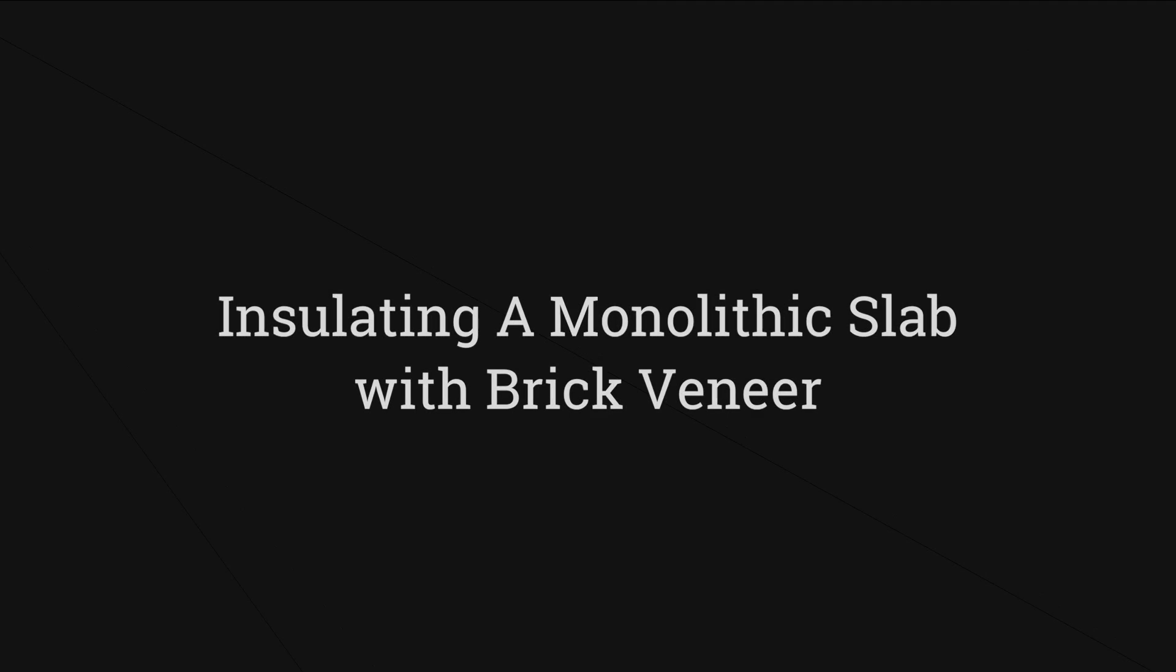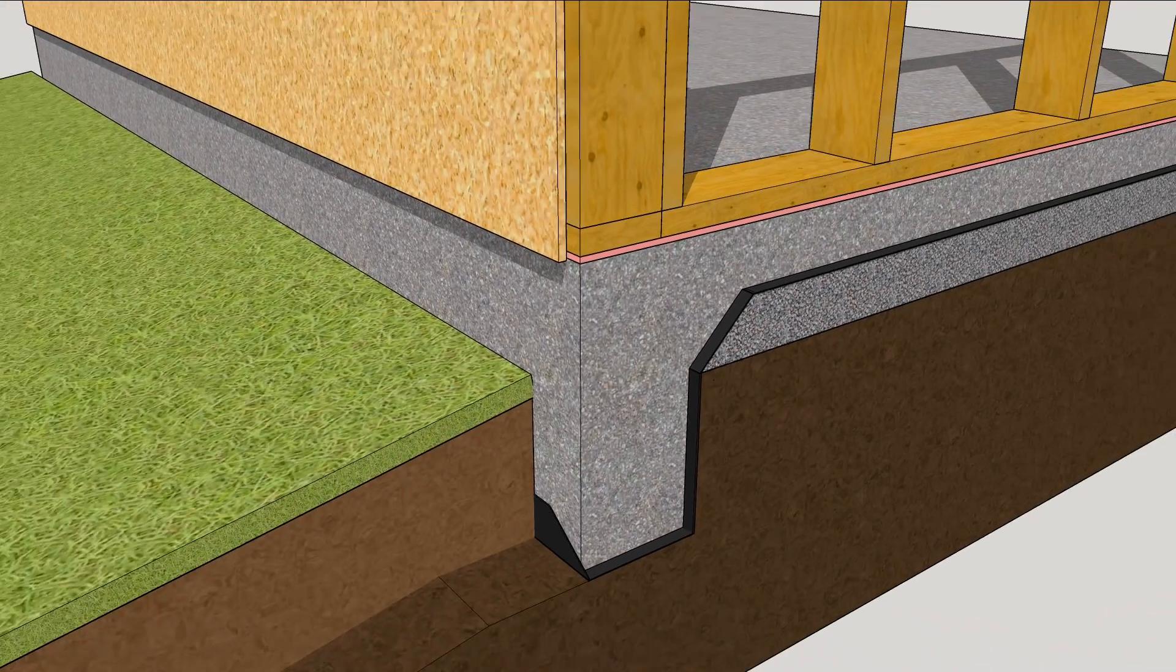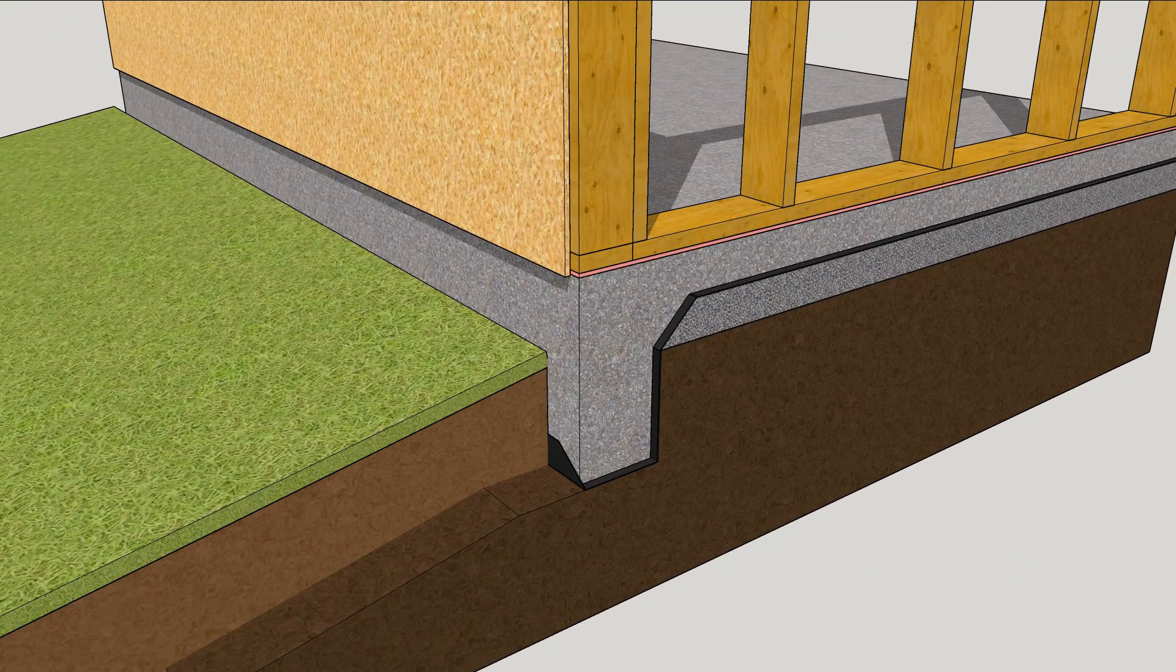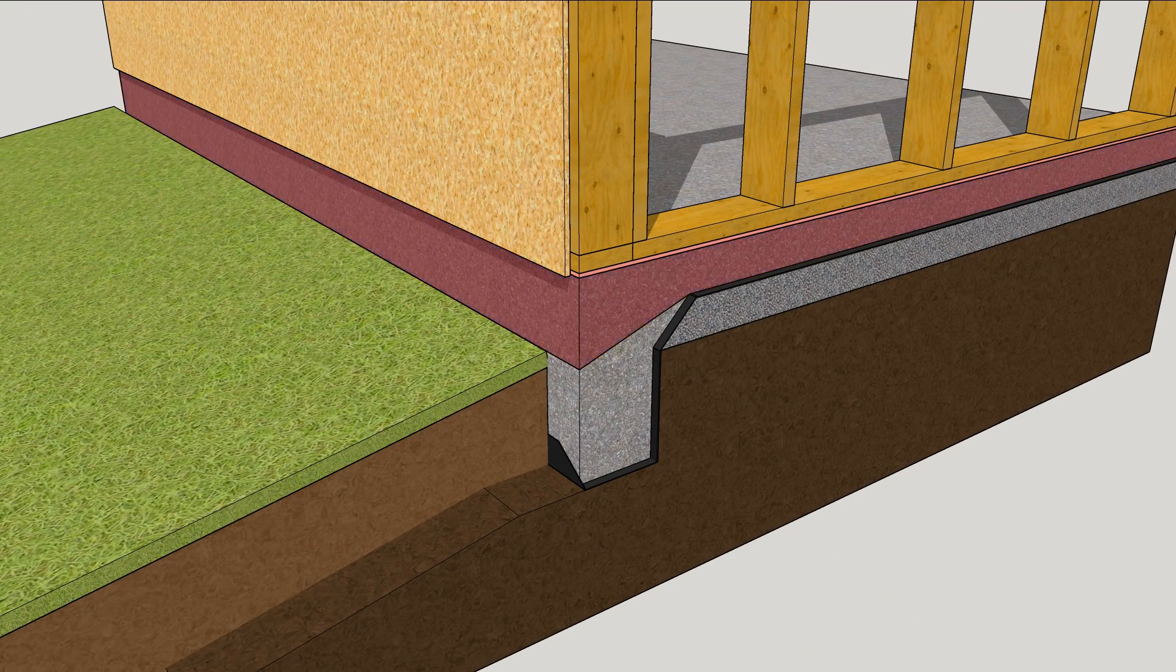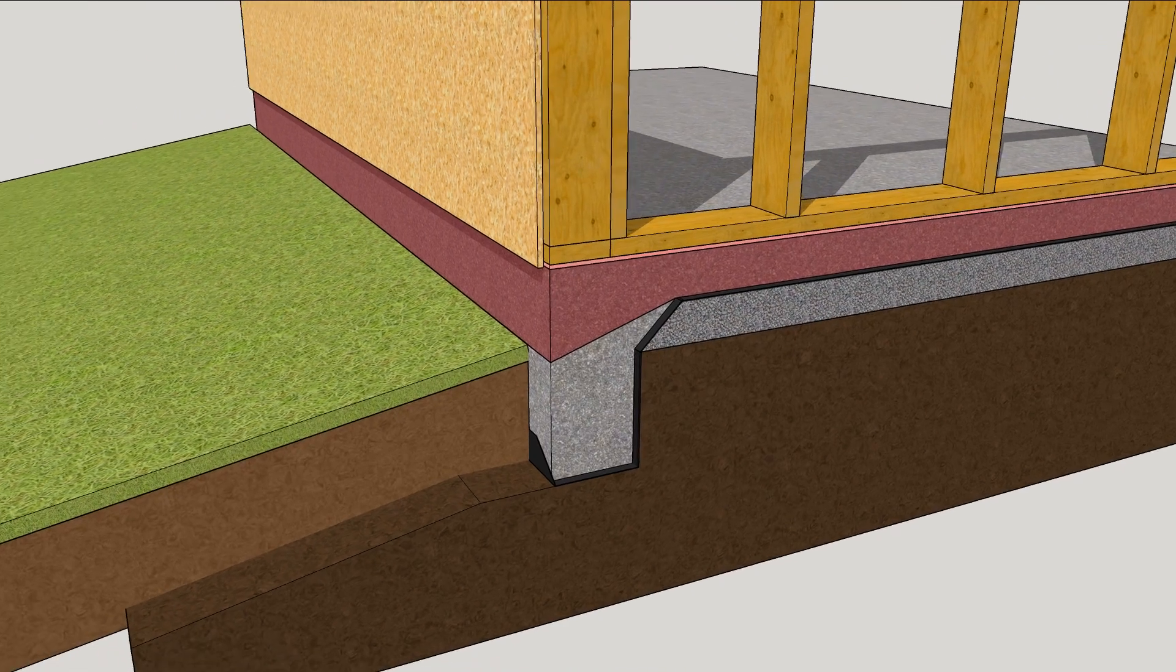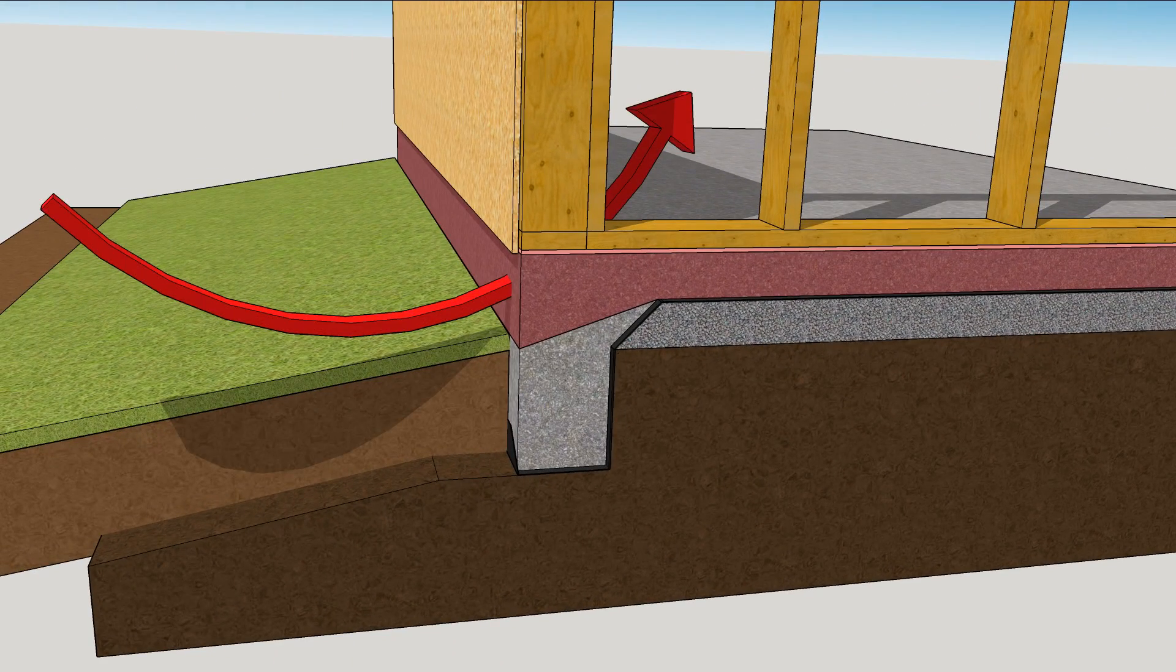One of the cold spots on a house is where the edge of a slab is exposed to the outdoors. Because outdoor air is a lot colder than the ground in winter and hotter in summer, this thermal bridge is really more like a thermal runway.